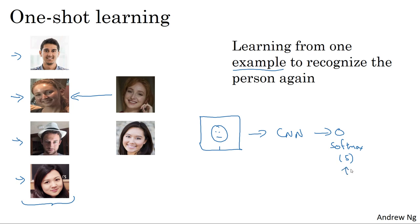But this really doesn't work well because if you have such a small training set, it's really not enough to train a robust neural network for this task. And also, what if a new person joins your team? So now you have five persons you need to recognize, so there should now be six outputs. Do you have to retrain the ConvNet every time? That just doesn't seem like a good approach.